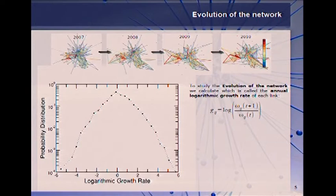So to do so we calculate what is called the annual logarithmic growth rate for each pair of users in the network - the logarithm of the total amount of email communication sent in one year divided by the total amount of communication sent the year before. So we calculate this quantity for all the data we have of the four years and we get this probability distribution.